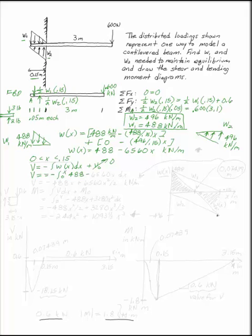This gives me V is negative 488x plus 6560x squared over 2 in kilonewtons. Double-check that what you've got here makes some sense.